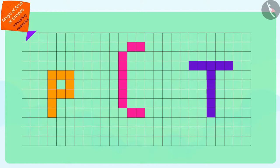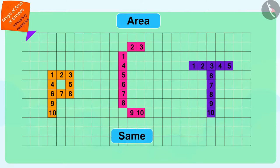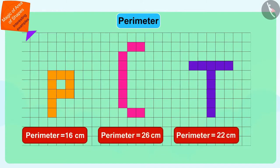Children, you have seen how the areas of the letters of Pinky, Chanda and Tufan are the same. However, their perimeters are different. It is quite possible that the shapes having the same area may vary in perimeter.